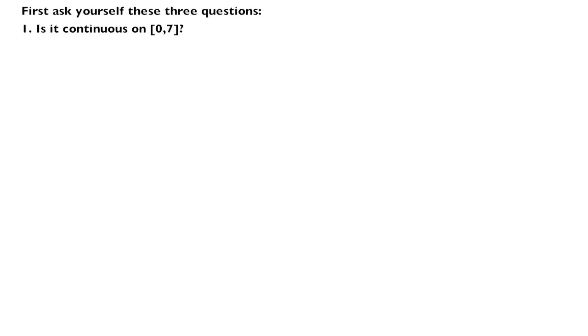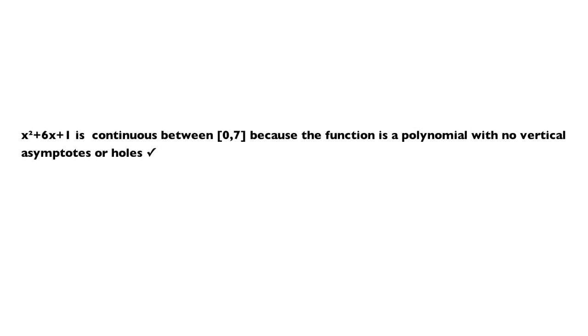First, ask yourself these three questions. First question: is it continuous on the interval between 0 and 7? X squared plus 6X plus 1 is continuous on the interval of 0 and 7 because the function is a polynomial.